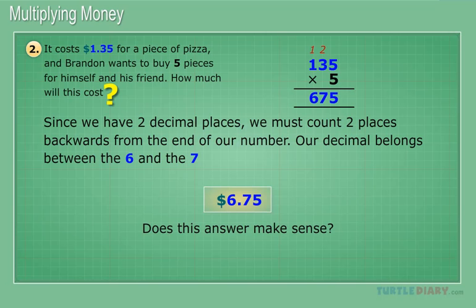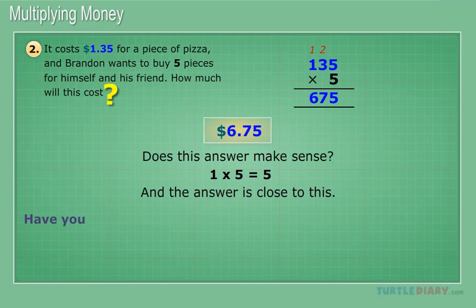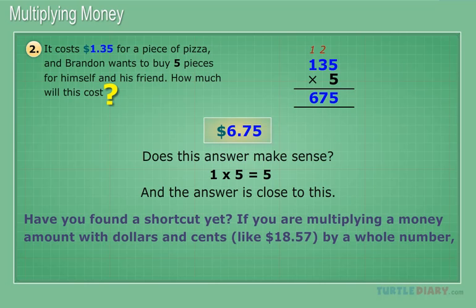Does this answer make sense? 1 times 5 equals 5, and the answer is close to this. Have you found a shortcut yet? If you are multiplying a money amount with dollars and cents by a whole number, you will always move the decimal back two places.